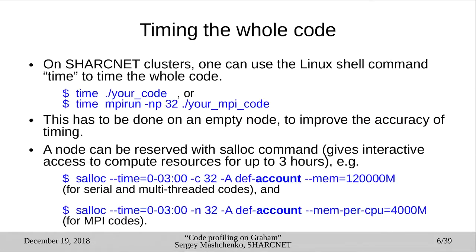For simple profiling, you must have some familiarity with Linux as SharpNet users, and you're probably aware of the `time` command, which is a built-in command in the bash shell. You just type `time` then the path to your code. It can also be used with MPI codes by prepending `time` before the `mpirun` command, and that should be done on an interactive node. To reserve a full compute node for profiling, one should use the `salloc` command as described, with the `-c32` switch requesting 32 CPU cores.